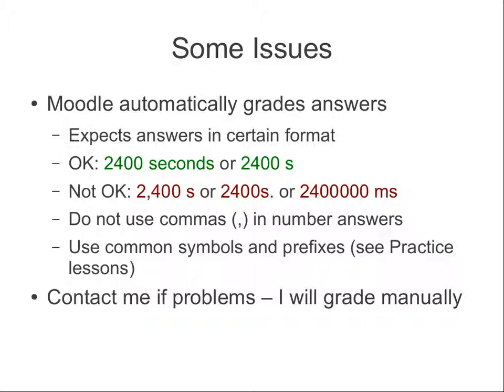Similarly, if you gave a dot after the 's', or gave the answer in milliseconds — it's the same number but it's not accepted by the software. So: don't use commas, and try to use common symbols and prefixes. Even though 2.4 million milliseconds is correct, it's better to express the answer in seconds. But if you gave these answers and the system told you that you were wrong, contact me and I'll manually grade it and mark all of these as correct. I'll only do that if you contact me, so if you think your answer is correct, just tell me and I'll manually change the score.